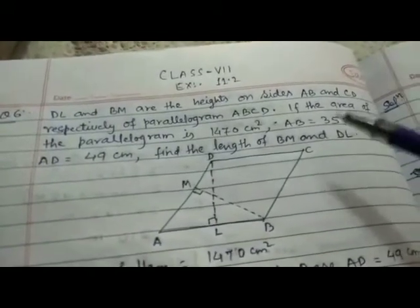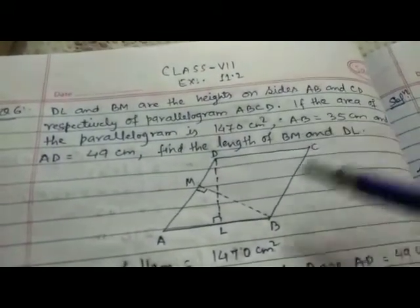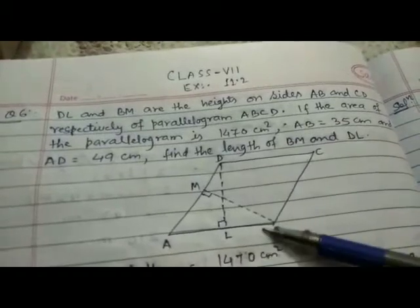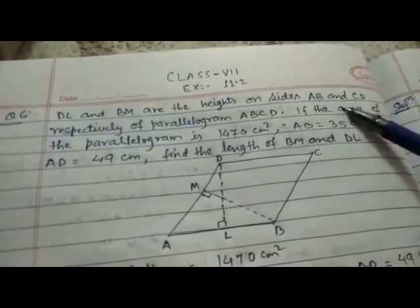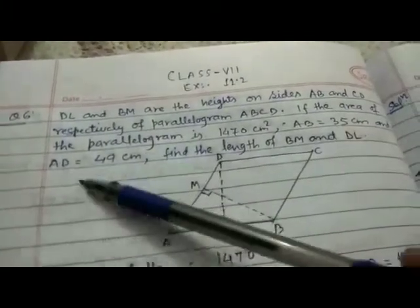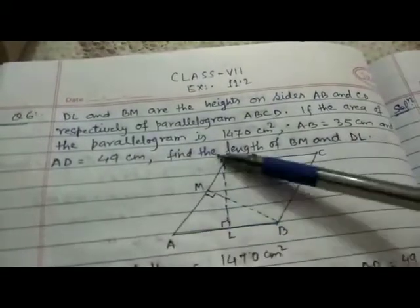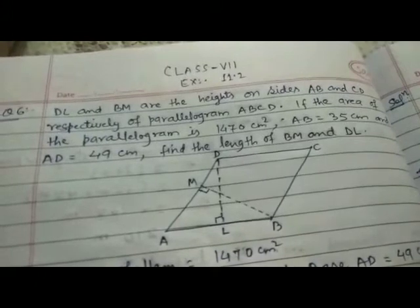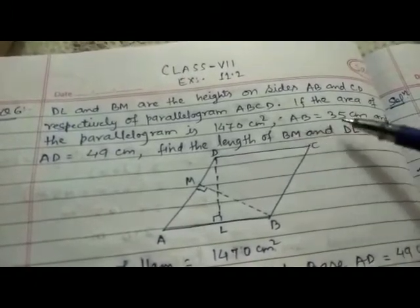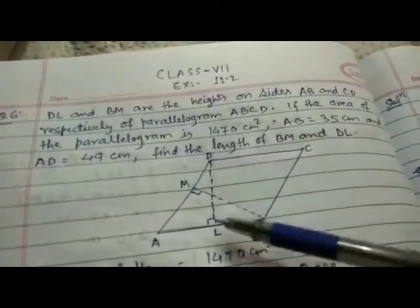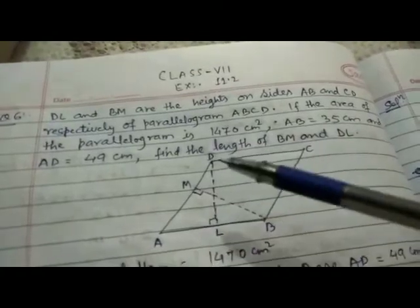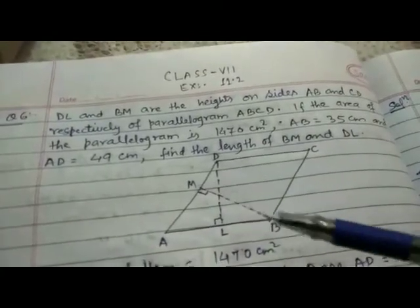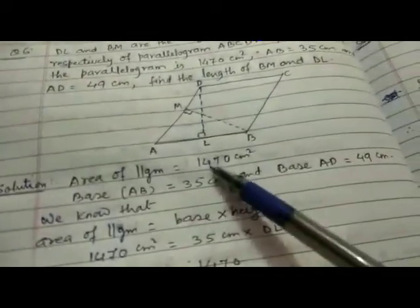You have to find the length of sides BM and DL. DL and PM are the altitudes, means the heights, so you have to find the value of the height.